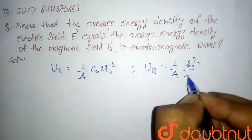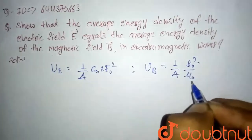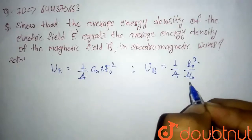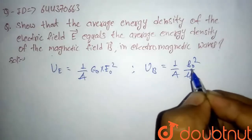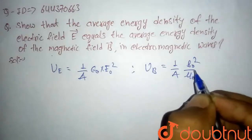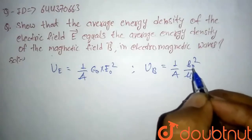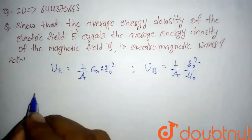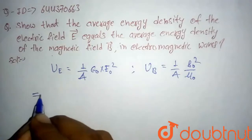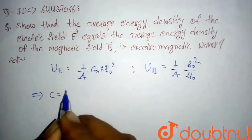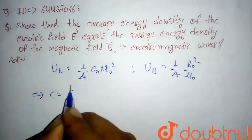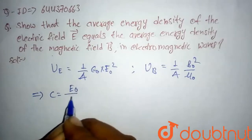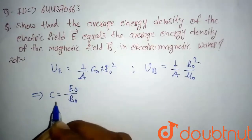Also, we note that the average energy density of the magnetic field is given by 1 by 4 times B₀ squared upon mu naught. Here mu naught is the magnetic permeability and B₀ is the maximum value of the magnetic field.